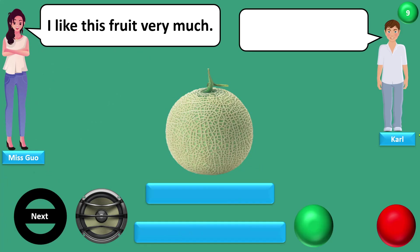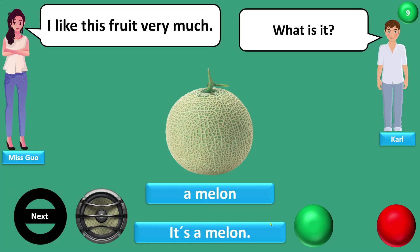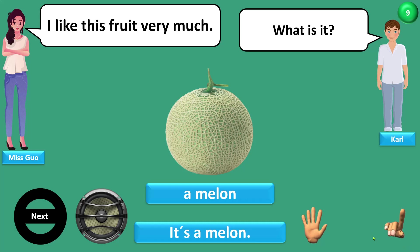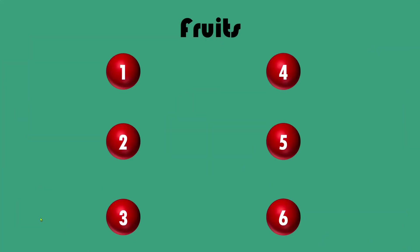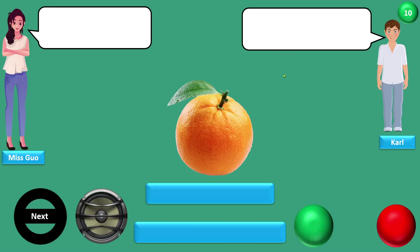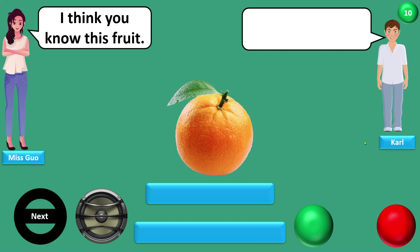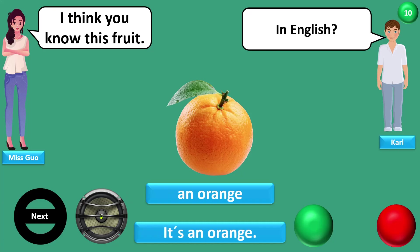I like this fruit very much. What is it? A melon. It's a melon. I think you know this fruit. In English? An orange. It's an orange.